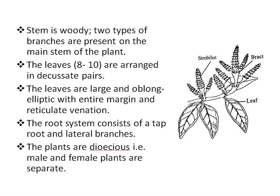There are only two leaves at each node, and the node is a swollen part. Leaf pairs often lie in one plane, giving the appearance of a pinnate leaf to the branch. The apex of the leaf is acute and the petiole is very short. Some scaly leaves are also present.